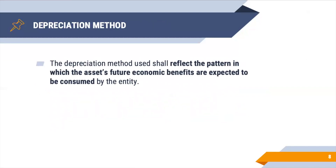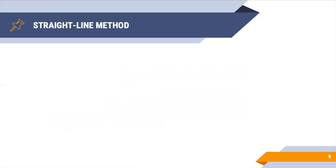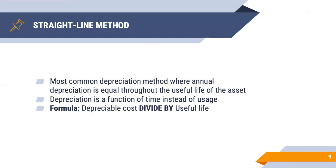The depreciation method used shall reflect the pattern in which the asset's future economic benefits are expected to be consumed by the entity. There are various methods, and the method shall be reviewed at least each financial year-end. If there are changes, then the change shall be accounted for as a change in accounting estimate. The first method is the straight-line method — the most common depreciation method where annual depreciation is equal throughout the useful life of the asset, and is a function of time instead of usage. The formula is the depreciable cost divided by the useful life of the asset.